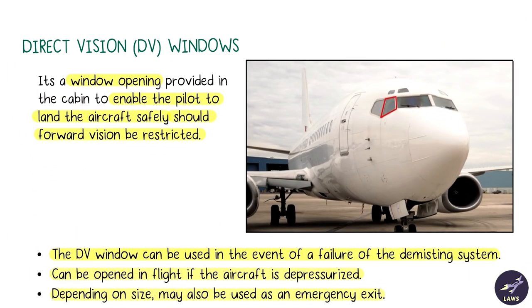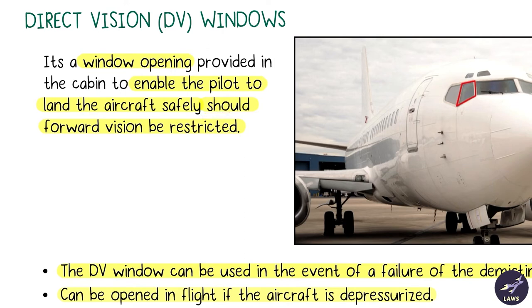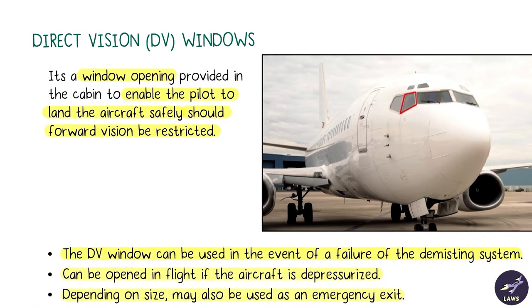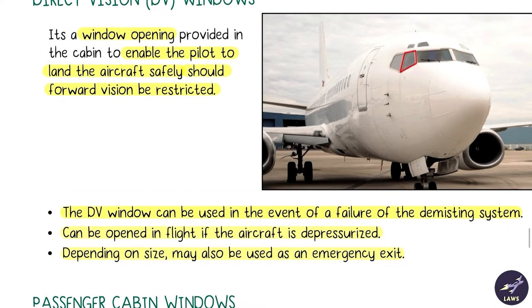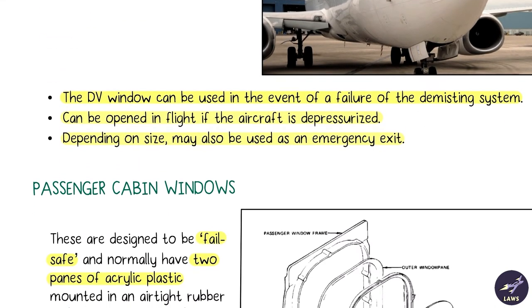Next we have DV windows, direct vision windows. It enables the pilot to land the aircraft safely should the forward vision be restricted. We will use this in case there is a failure of the demisting system. Suppose you are in an airport where there is no navigational aid available, so you cannot fly IFR and then there is a demisting system failure. The window is full of fog. Then you can see from the DV windows and land. Depending upon size, it may also be used as an emergency exit.